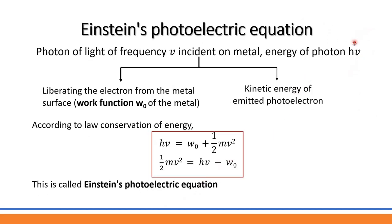So what energy does the electron get? It gets h-nu energy. But this energy is used for two purposes. The first purpose is liberating the electron from the metal surface — there is a binding force between the outer shell electron and the metal surface, and the nucleus binds the electron. The minimum energy required for this is called the work function W₀, and it depends on the metal.